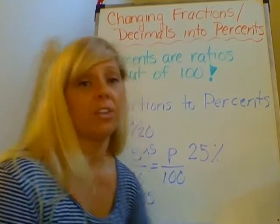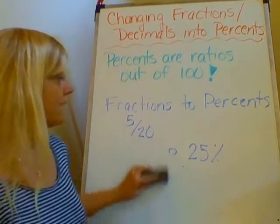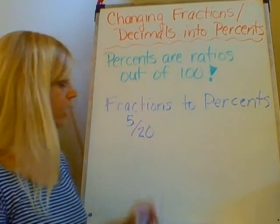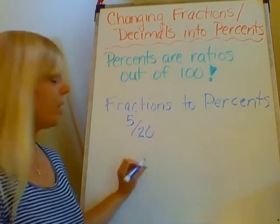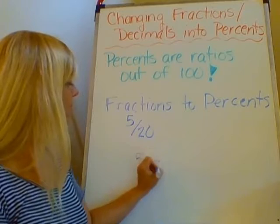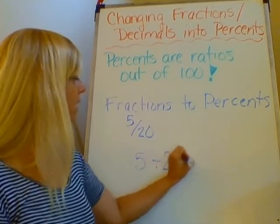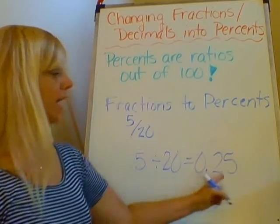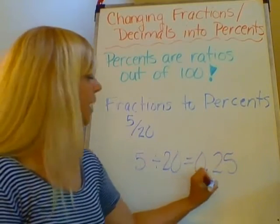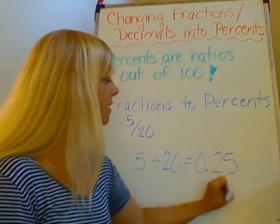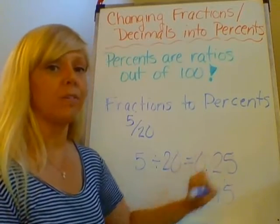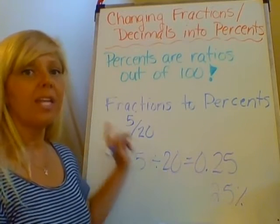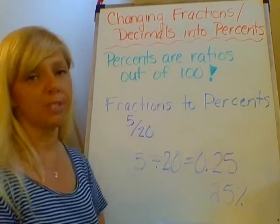The other way we can do this is change it into a decimal and then change the decimal into a percentage. So if we take 5 over 20, we can take 5 and divide it by 20 and we would get 0.25, and 0.25 then becomes 25%. Think about it as money — 25 cents is 25 out of 100, which is 25%. So that is how to change a fraction to a percent.